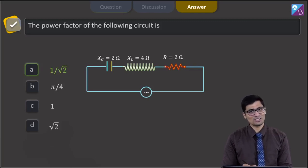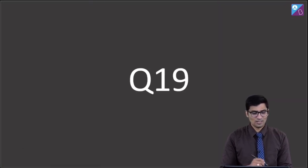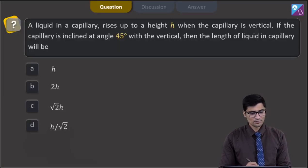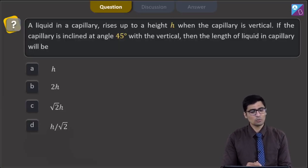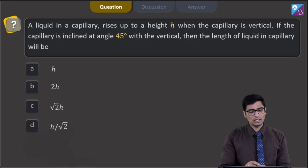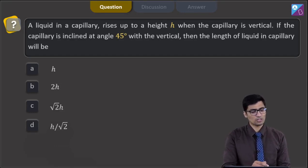Now let us proceed to question number 19. The question says a liquid in a capillary rises up to a height h when the capillary is vertical. If the capillary is inclined at an angle of 45 degrees with the vertical, then the length of the liquid in the capillary will be — options are h, 2h, root 2h, or h by root 2.